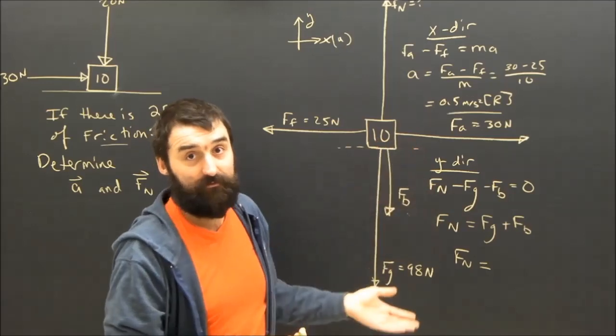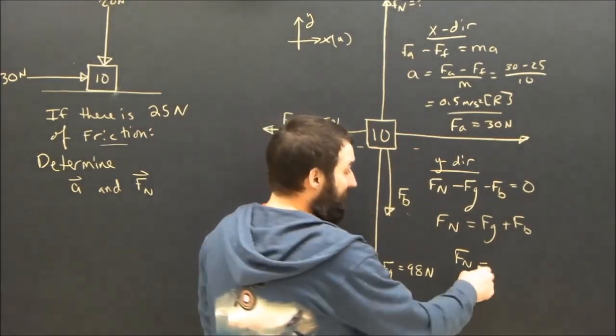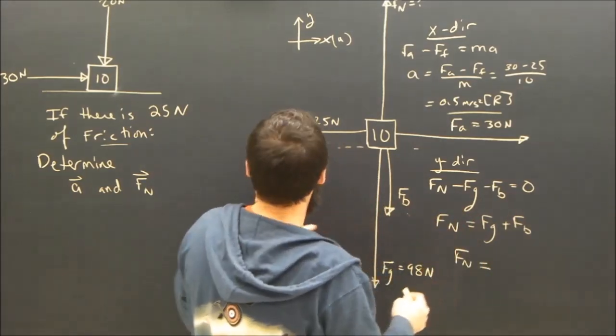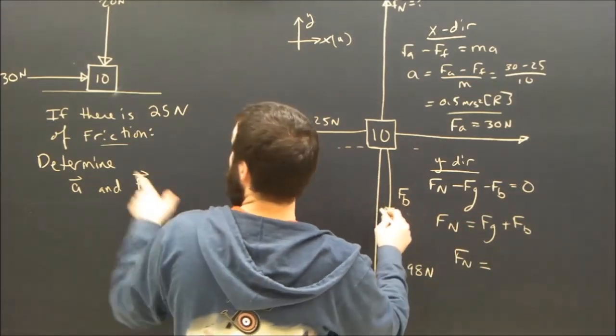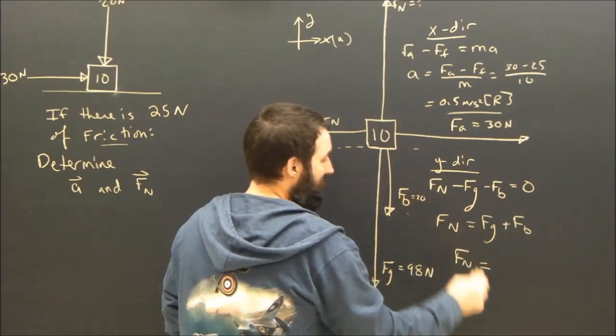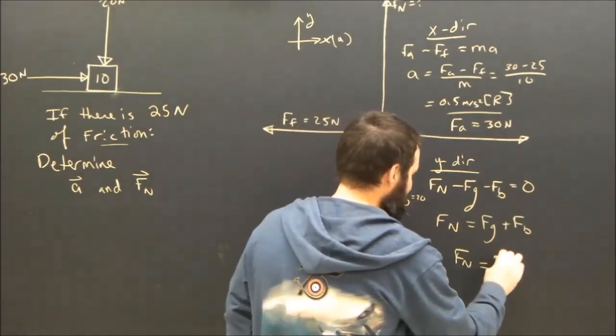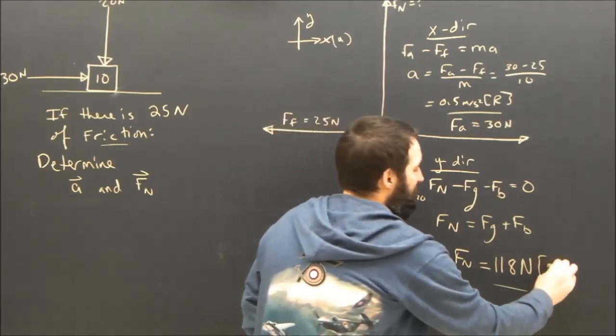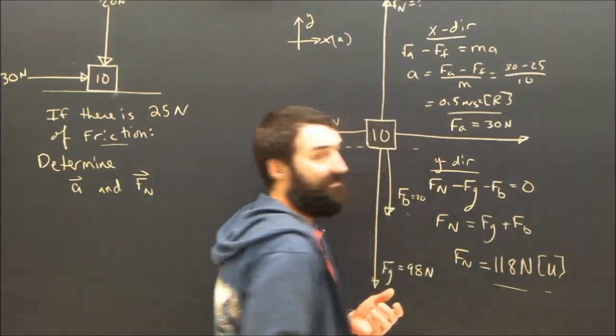And then I'm not sure what they're supposed to do with any of the rest of the question. But that happens. So 98 plus, what's Fb? 20 newtons? 98 plus 20 is 118. 118 newtons. I guess I should put up.